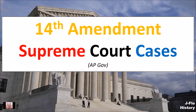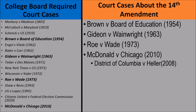Welcome back to J Flow History. Today we're going to be talking about the court cases from the 14th Amendment. The court cases you'll need to know are Brown v. Board of Education, Gideon v. Wainwright, Roe v. Wade, and McDonald v. Chicago. Underneath McDonald v. Chicago is District of Columbia v. Heller, which you must know for McDonald v. Chicago to make any sense. Just like the First Amendment video, before we begin with court cases we need to talk about the amendment itself.